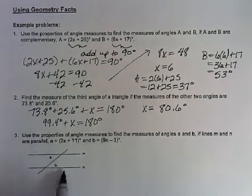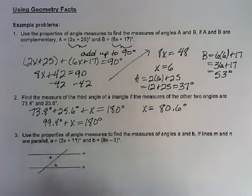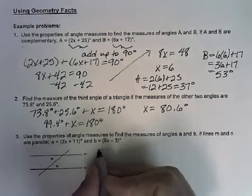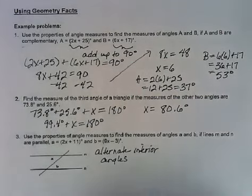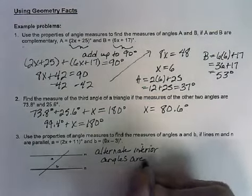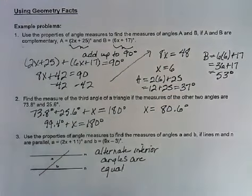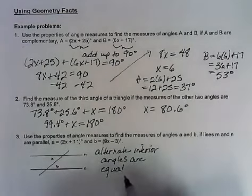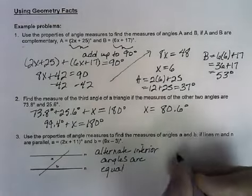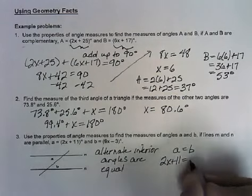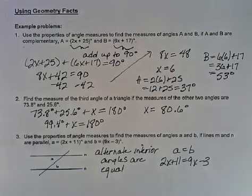In this problem, we've got two parallel lines and a transversal, and we're trying to find the measures of these two angles. In geometry terms, these two would be alternate interior angles, and one of the geometry facts we talked about is that alternate interior angles are equal in measure. Here where we have the expression for the measure of each angle, we know that a and b are actually equal, so we're going to take those two expressions and set them equal to each other.